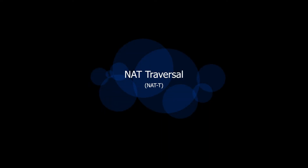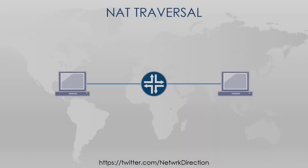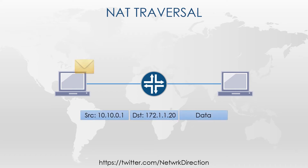NAT can be very useful to us, but it can also cause problems. Think about a case like this: an application needs to send traffic from one host to another. This particular app puts the source IP address in the packet's payload. The host also puts the source IP in the packet's header.